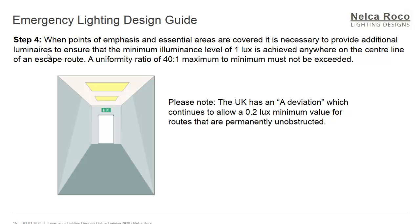Step 4: once the points of emphasis and essential areas are covered, it is necessary to provide additional luminaires to ensure that the minimum illuminance level of 1 lux is achieved anywhere on the centerline of an escape route. A uniformity ratio of 40:1 maximum-to-minimum must be achieved — which works out to approximately 0.04 overall uniformity. Please note that the UK has a deviation which continues to allow 0.2 lux minimum value for routes that are permanently unobstructed, so sometimes 0.2 lux is allowed instead of 1 lux.